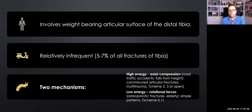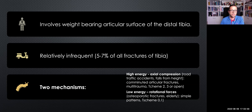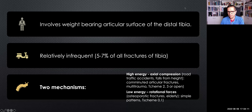A few theoretical concepts before. Remember that tibial pilon fractures involve the weight-bearing articular surface of the distal tibia. They are not so common injuries, fortunately. They are secondary to two main mechanisms, but the one I want to point out is the high-energy axial compression — injuries most often secondary to road traffic accidents or falls from height.